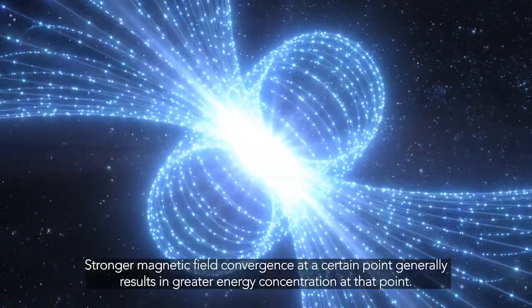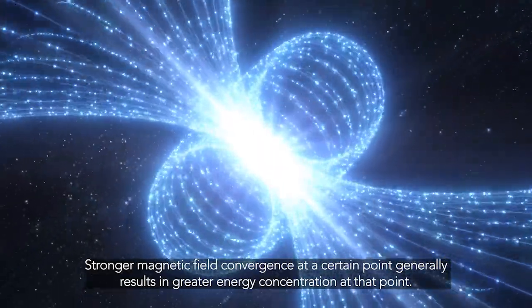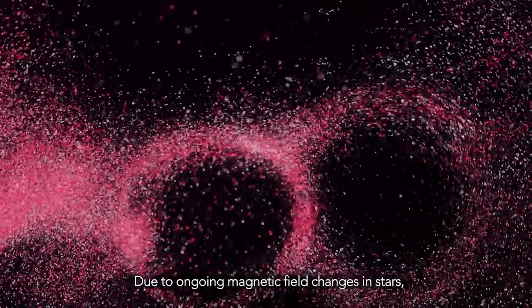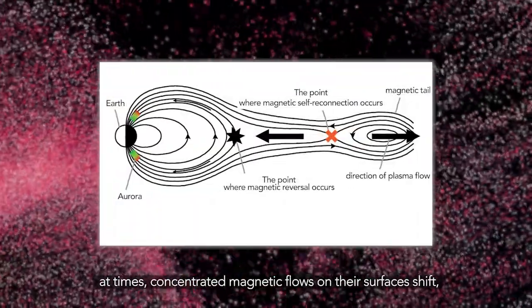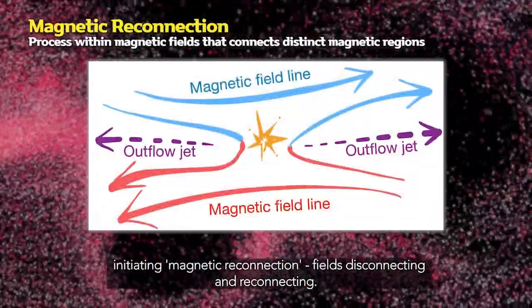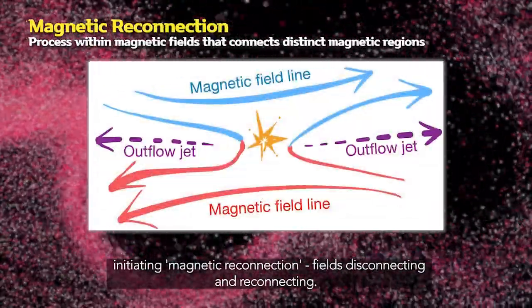This occurs when a star's energy concentrates in an area. Stronger magnetic field convergence at a certain point generally results in greater energy concentration. Due to ongoing magnetic field changes in stars, concentrated magnetic flows on their surfaces shift, initiating magnetic reconnection where fields disconnect and reconnect.